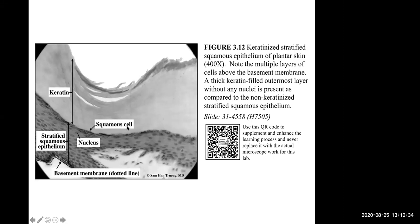If cells are filled with keratin, that protein fills up the cells and there will be no nuclei — they'll be dead, filled with keratin. Keratin is a protective protein that also helps provide a water barrier to your body, so when you swim, water isn't leaking out of or into your body.